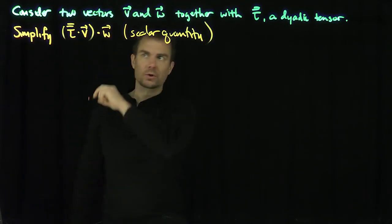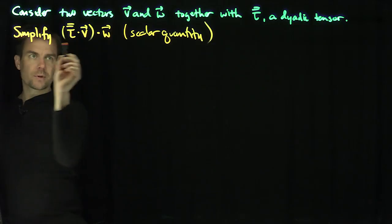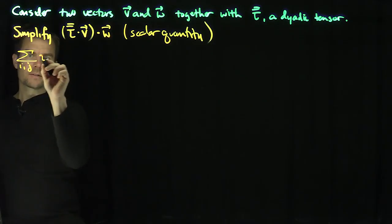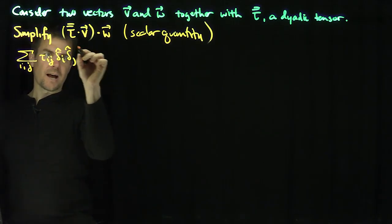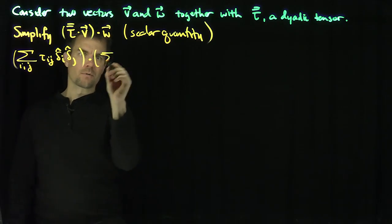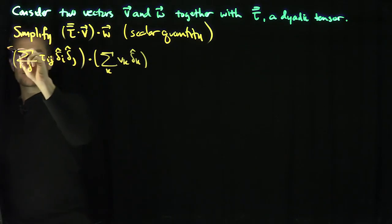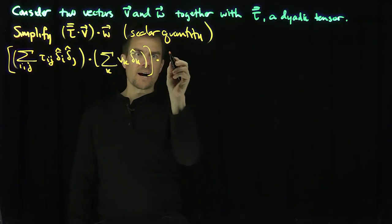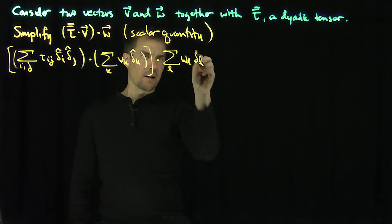This will help us get used to our contracting operators, so let's do it. Tau is going to be the sum over i and j of tau_ij delta-i-hat delta-j-hat. We dot that with V, which is the sum over k of V_k delta-k-hat. That's the innermost bracket. And then one more index for W: we dot with the sum over L of W_L delta-L-hat.